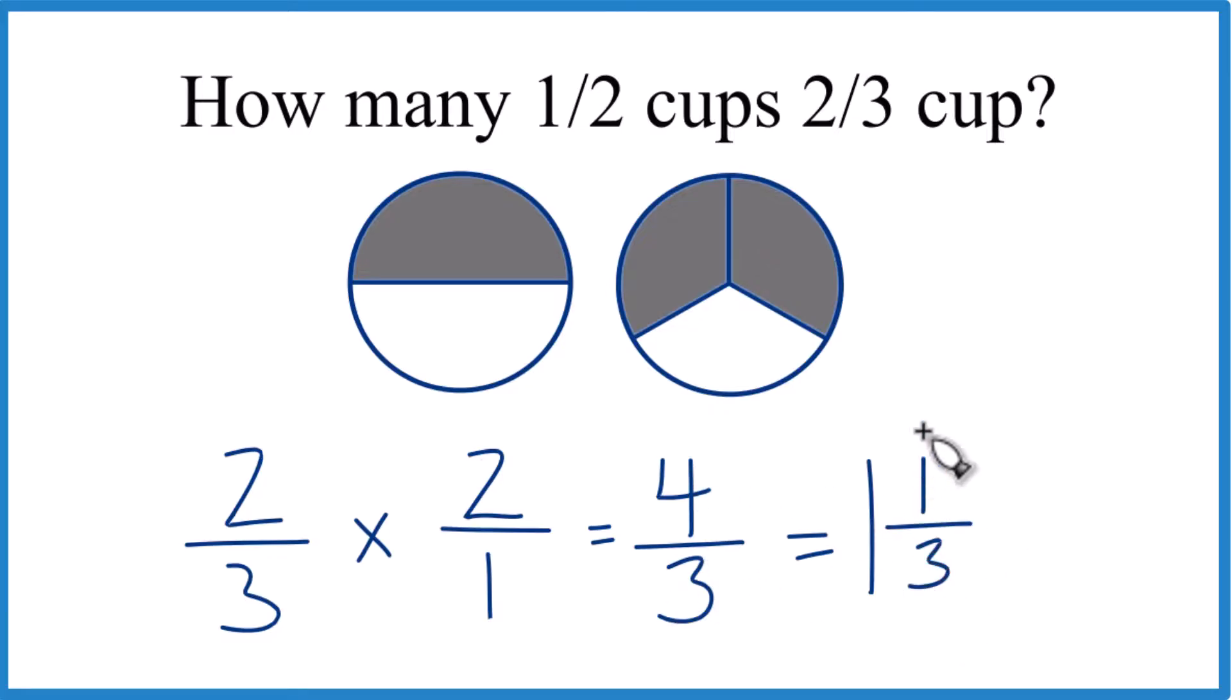Bring the three across. So we could say that one and one-third of these half cups will go into two-thirds of a cup.